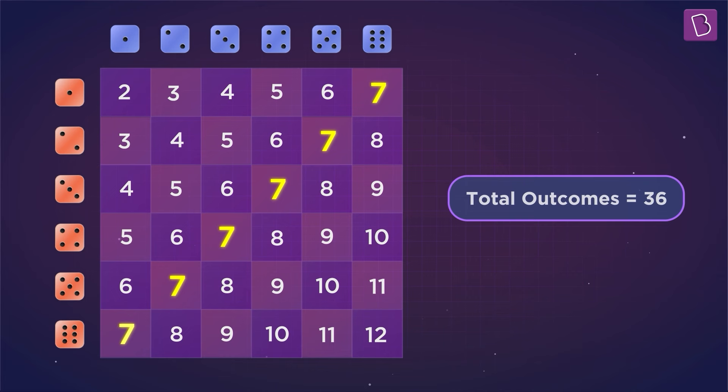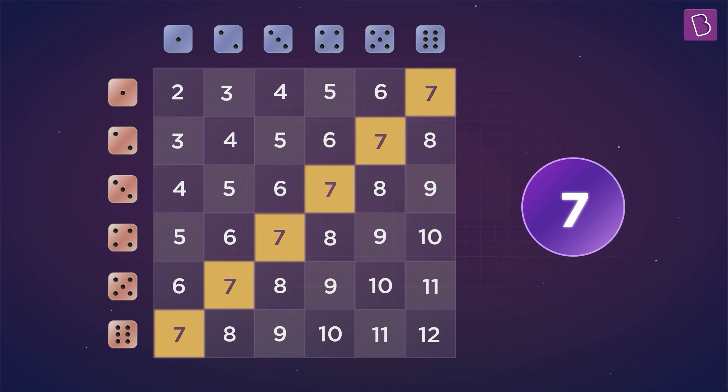Sitting on the main diagonal, seven simply appears in this table more than any other number, making it the most likely outcome.